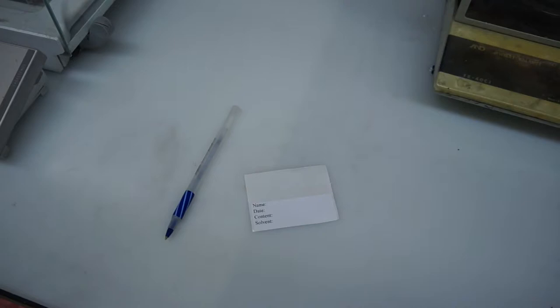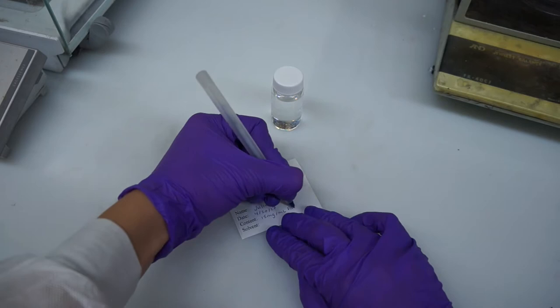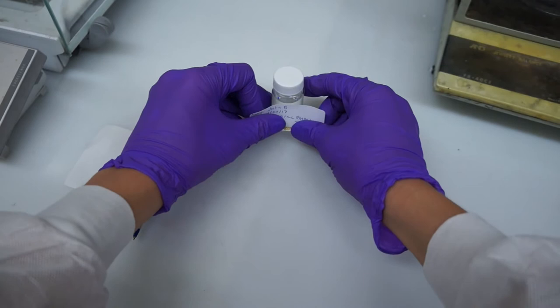Now we can label our PMMA solution. I've put my name, the date, and the concentration of the solution, including the identities of the solute and the solvent, in this case, PMMA and toluene.